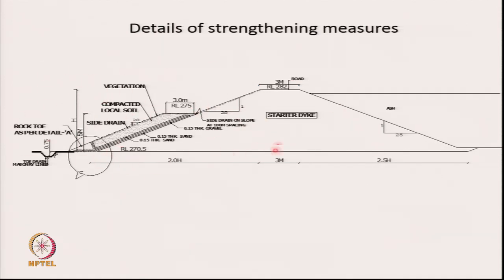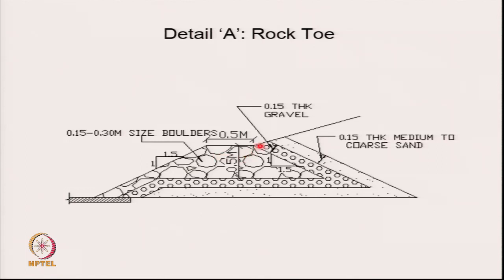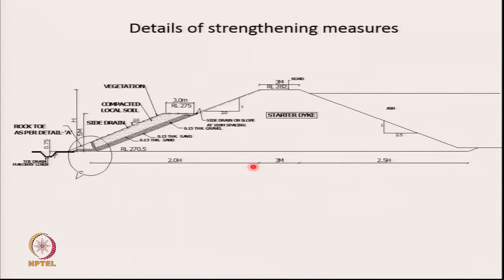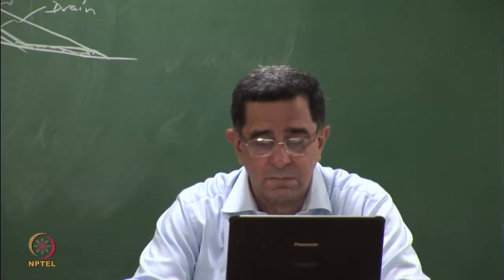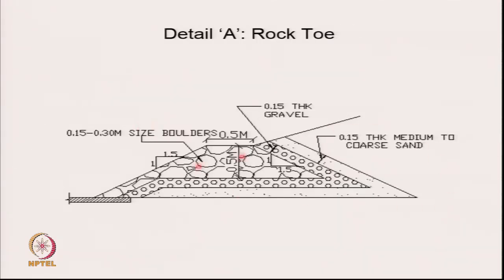A stabilizing berm will be nothing but some additional soil, ash, or tailings along with a drain, a rock toe, and a toe drain. Typically a rock toe is layered: ash or tailings, then sand, then gravel, then cobbles and boulders. The stabilizing berm is made of the same local material and this is the rock toe. Cobbles and boulders are not easily available and are expensive, so you make use of the local soil or the material in the pond.